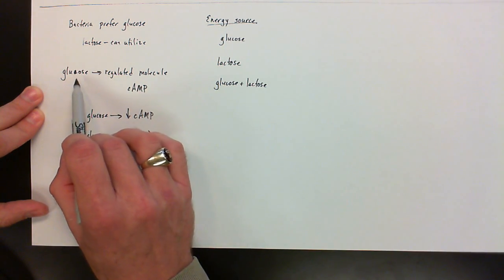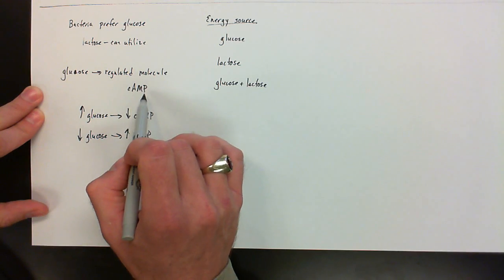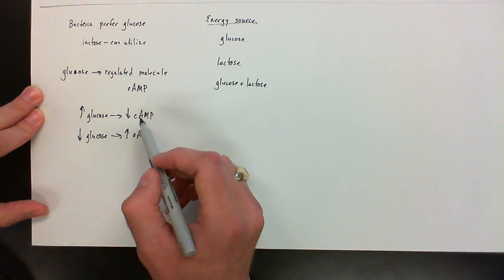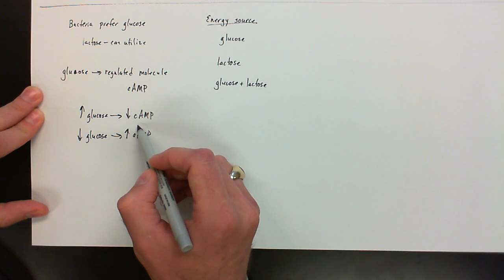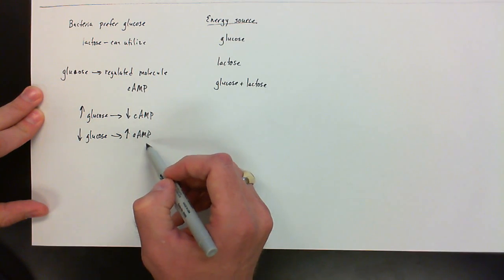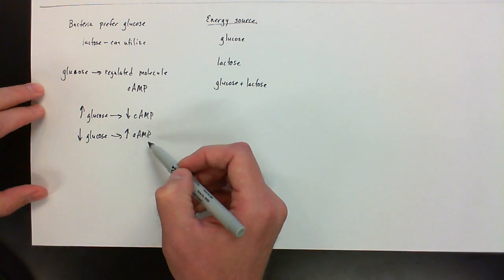What you're also going to see is glucose is going to regulate cyclic AMP levels such that if there's a high level of glucose in the environment for it, you're going to see a low level of cyclic AMP. When you see a low level of glucose, you're going to see an increased level of cyclic AMP in the cell.